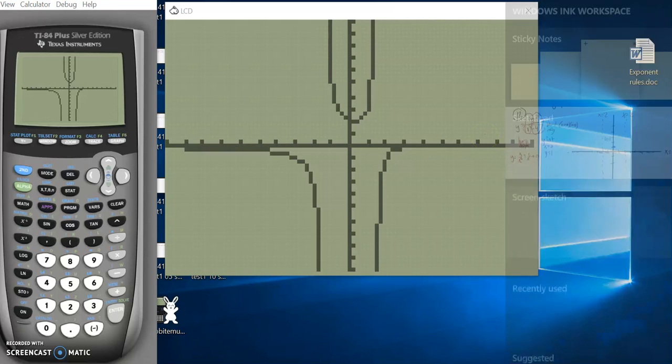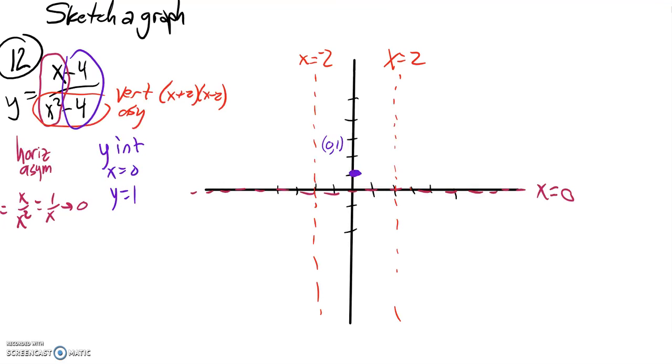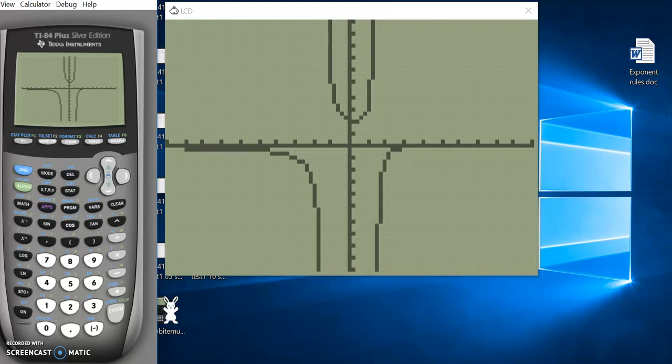Okay, great. So I can sketch that. So it looks like the graph then will look something like this and then nested inside these two asymptotes. Kind of nested inside those two asymptotes. So there's a sketch of that graph for number 12.